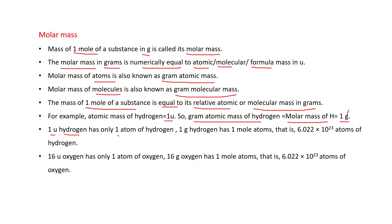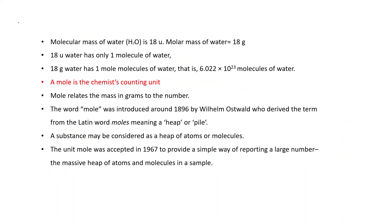For example, 1 U hydrogen has only 1 atom of hydrogen, but 1 gram of hydrogen means 1 mole of hydrogen atoms, which is 6.022 × 10²³ atoms. Similarly, 16 U oxygen represents only 1 atom of oxygen, but 16 grams of oxygen means 1 mole of oxygen atoms, that is 6.022 × 10²³ atoms. The molecular mass of water (H₂O) is 18 U, so its molar mass is 18 grams. 18 U water has only 1 molecule of water, but 18 grams of water has 1 mole of water molecules, that is 6.022 × 10²³ molecules.